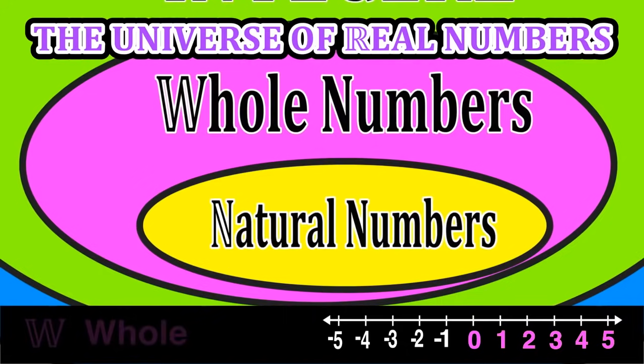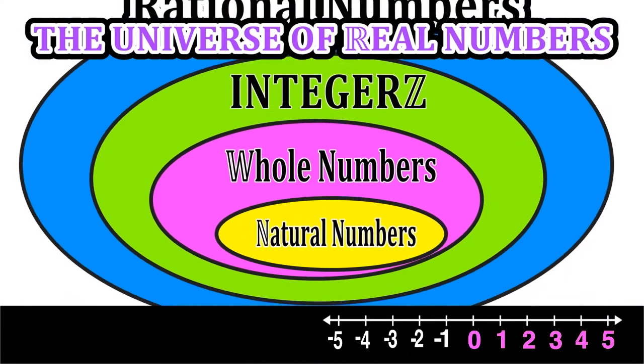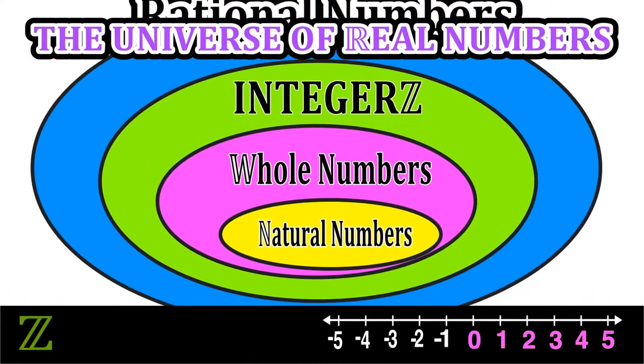Now the whole numbers are a smaller subset of the integers. Integers are all of the natural numbers and zero, so all of the whole numbers as well, and their negative counterparts. So now we move on forever in a positive direction and a negative direction here.